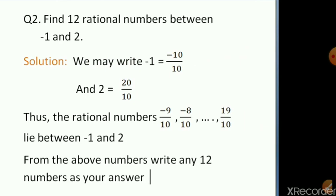Second case: find 12 rational numbers between minus 1 and 2. Here there is no denominator given, so how do we find the LCM? What we do is multiply 10 to both numerator and denominator. So minus 1 can be written as minus 10 by 10, and 2 can be written as 20 by 10. From minus 10 upon 10 to 20 upon 10, that is from minus 10 to 20, there are lots of fractions, so you can write any 12 rational numbers as your answer.